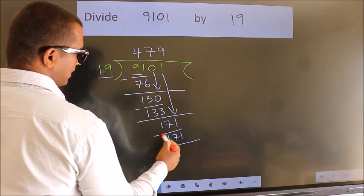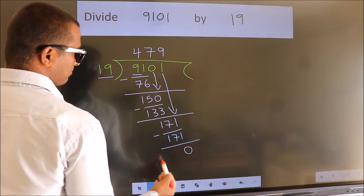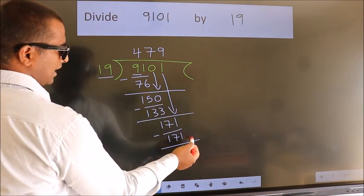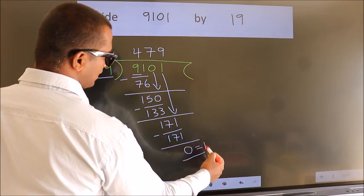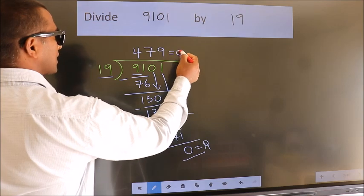Now, we subtract. We get 0. No more numbers to bring it down. So, we stop here. This is our remainder. This is our quotient.